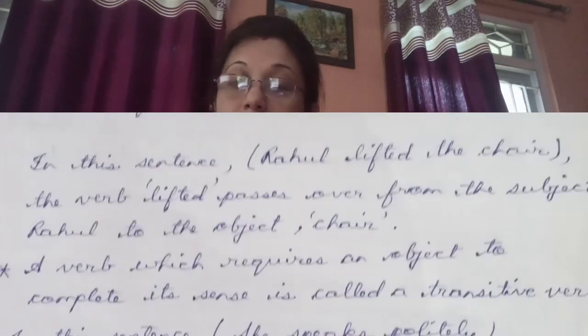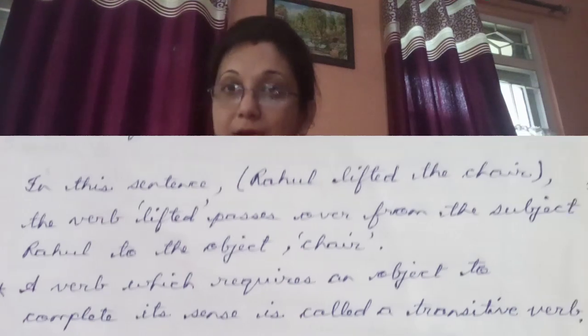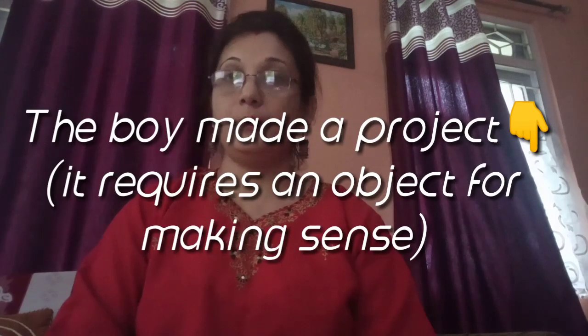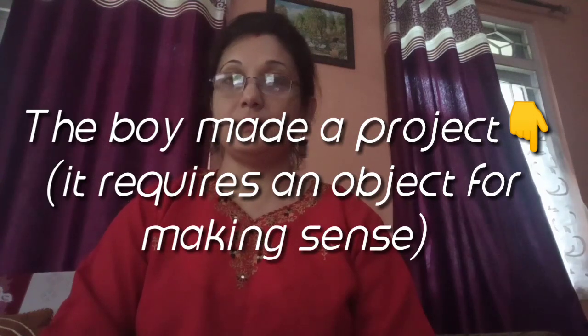In this sentence, 'Rahul lifted the chair' — the verb 'lifted' passes over from the subject Rahul to the object chair. So this is a transitive verb. Further examples: 'the boy made' — made what? You require an object. In the sentence 'the boy made a project', a project is the object. To make complete sense in the sentence you need an object, so 'made' is a transitive verb.